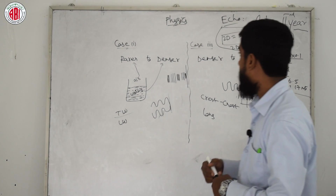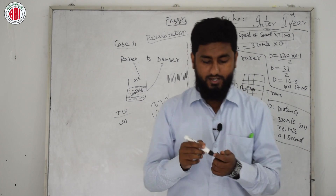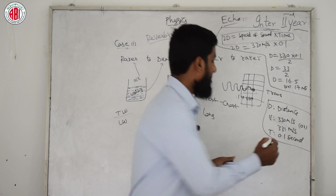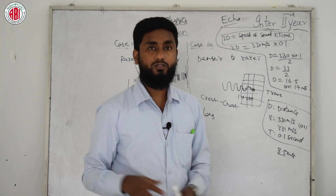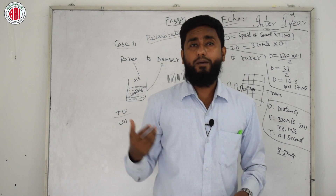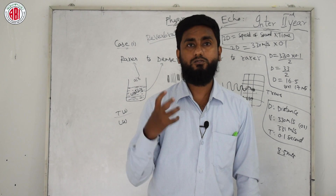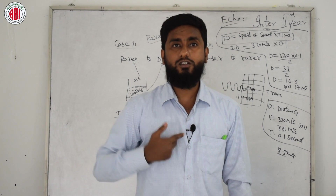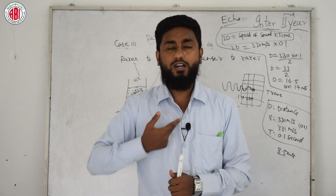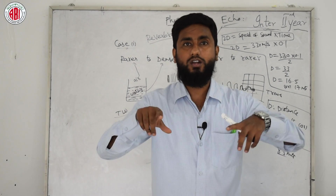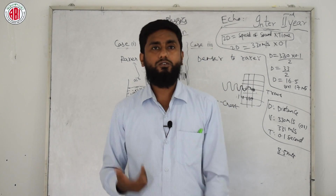Now, reverberation. You may have heard this word. Reverberation occurs when the distance is half of 2d — so if 2d gives 17 meters, reverberation occurs at about 8.5 meters. In simple Hindi: if the sound is 'gunj raha' (resonating/echoing in place), that is reverberation. If the exact original sound comes back, that is echo.